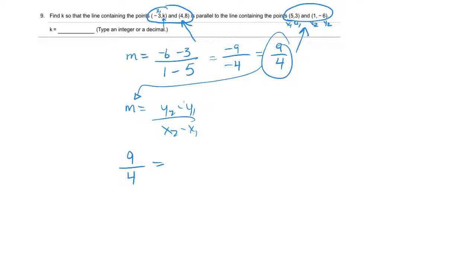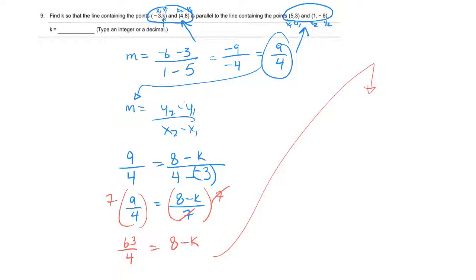So it would be 9 over 4 is equal to - now, let's call this x1, y1, x2, y2. So y2 is 8 minus y1 is k - that's awkward - over x2 is 4 minus x1 is negative 3. So just simplifying a little bit, I have 4 plus 3, that would be 7 on the bottom. Now, to solve for k, I want to get rid of the 8 and the 7. So the first thing I'm going to do is multiply both sides by 7. So that'll give me 63 over 4 is equal to 8 minus k because these 7s cancel. And then I want to solve for k. I think I'm going to add k to both sides. I'll add k here and add k there. So on the left side, I'll have k plus 63 over 4 is equal to 8. And now I'll subtract 63 fourths from each side.